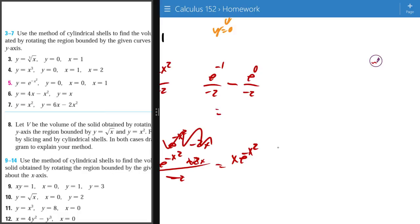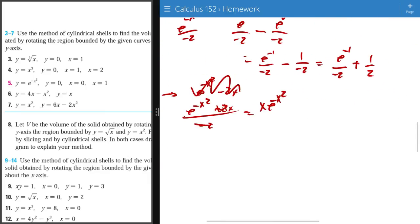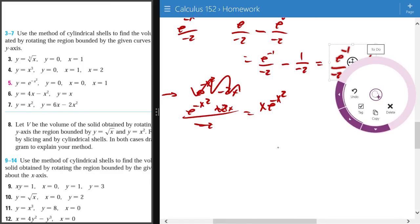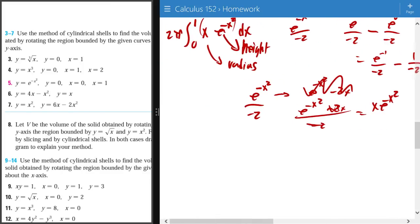So it will be equal to e negative 1 over negative 2, minus 1 over negative 2, which is equal to e negative 1 over negative 2, plus 1 over 2.